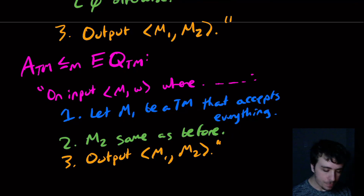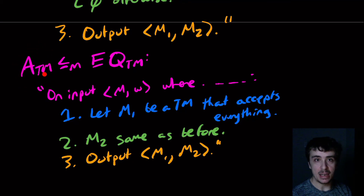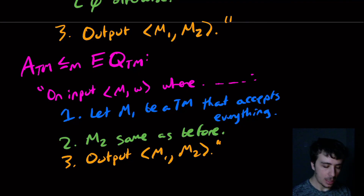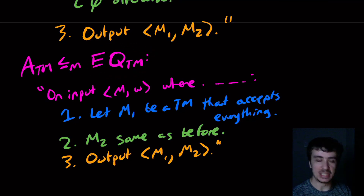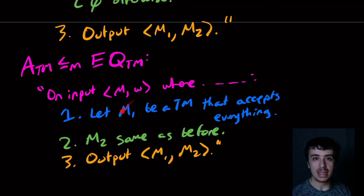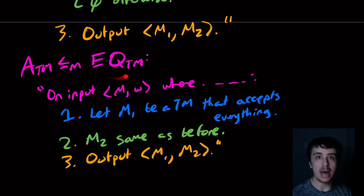Why does this work? If M accepts w, then M2 accepts everything, so M1 and M2 have the same language — the output is in EQTM. If M does not accept w, then M2 accepts nothing, so the machines are not equivalent — the output is not in EQTM. Therefore ATM mapping reduces to EQTM.